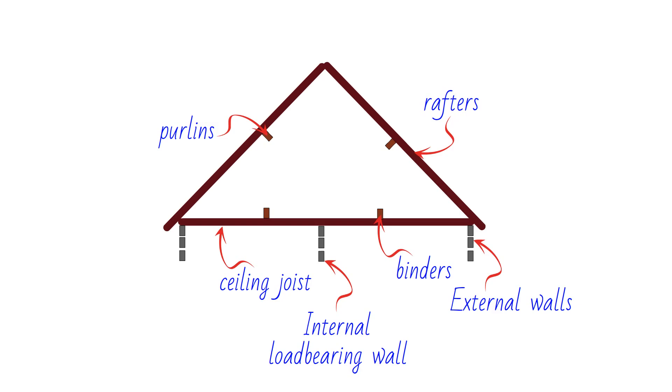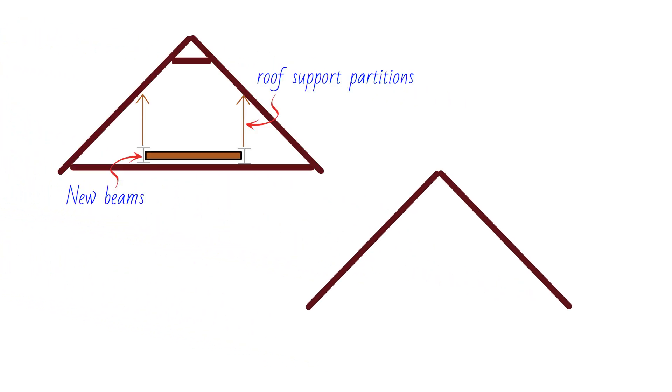If there are load-bearing walls at the first floor level, this serves as an advantage in conversion works as they provide support to load-bearing elements transferred from the roof, partitions and the new floor.